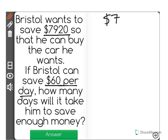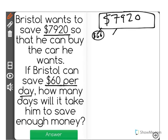Here's what we're visualizing here. There's a car that costs $7,920 and each day Bristol can save $60. And we're trying to figure out how many of these days it's going to take for Bristol to get enough money to buy that car.